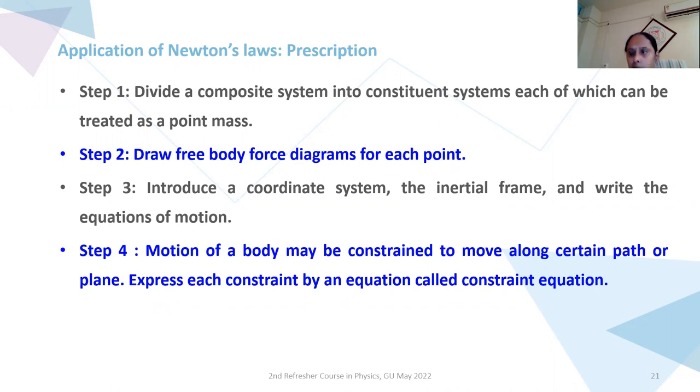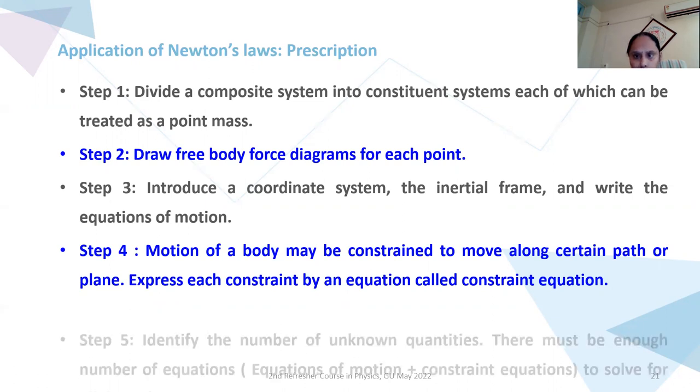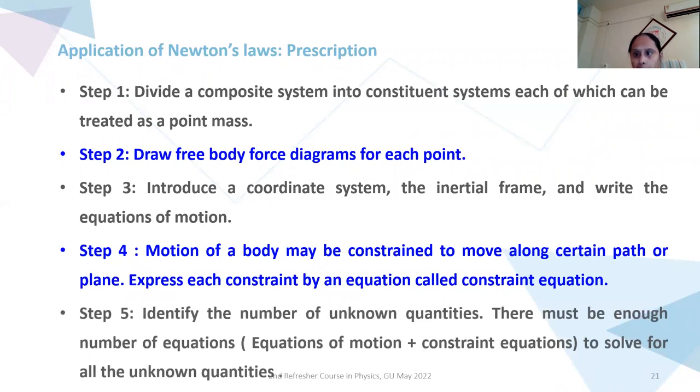Step four, motion of a body may be constrained to move along certain path or plane. So it defines what are the constraints in which motion is either restricted or can be done. Express each constraint by an equation and we call it a constraint equation. Step five, identify the number of unknown quantities. There must be enough number of equations. And this equation, when I say enough number of equations, from the third step I have certain number of equations of motion and from fourth step I have certain constraints. So when you want number of equations, it is nothing but equations of motion and constraint equations to solve for all the unknown quantities.